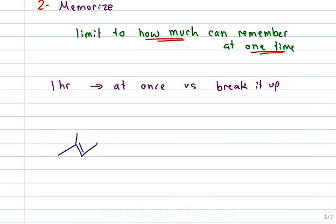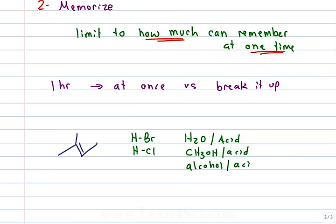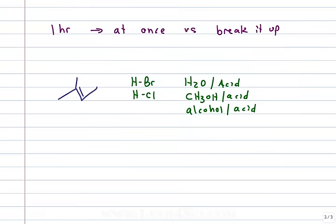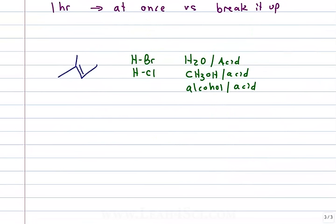You had hydrohalogenation — HBr and HCl. You had acid-catalyzed hydration — H2O with acid. But you probably didn't stop there: with H2O you probably had an alcohol, maybe CH3OH in acid, maybe another alcohol with acid. This is five reagents. So you sit there and memorize and memorize. These are five unique reactions. What if instead you looked for the pattern — what is similar or common about all of them?